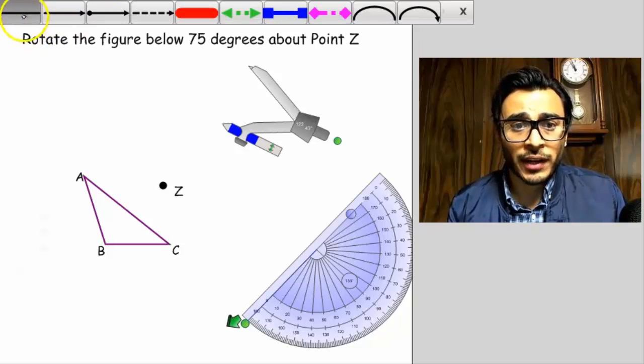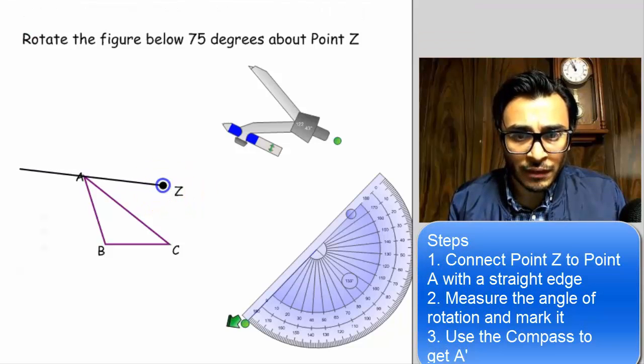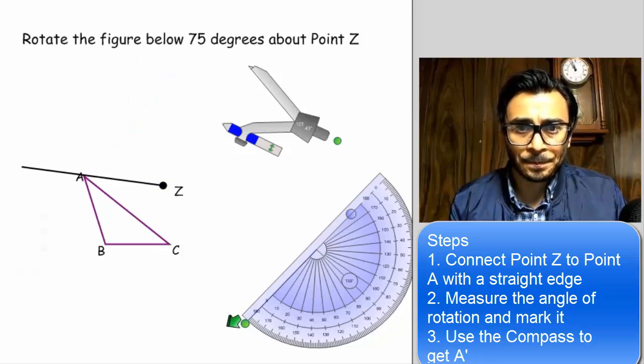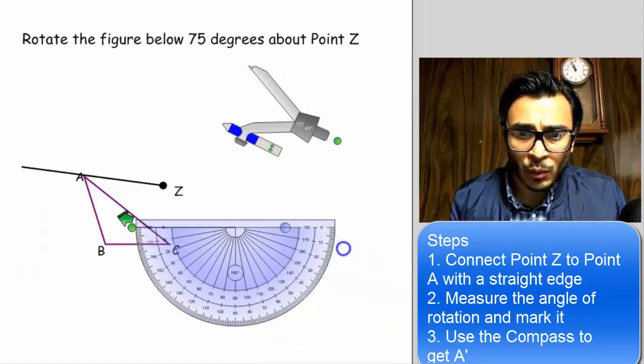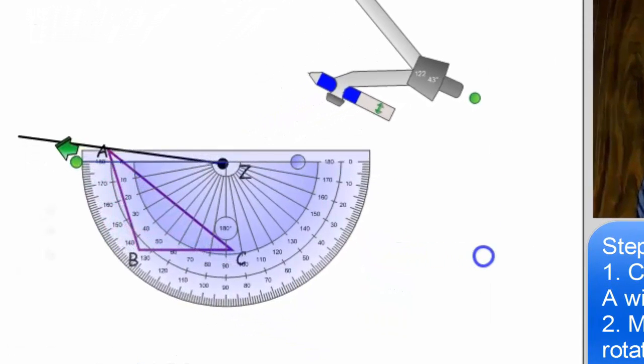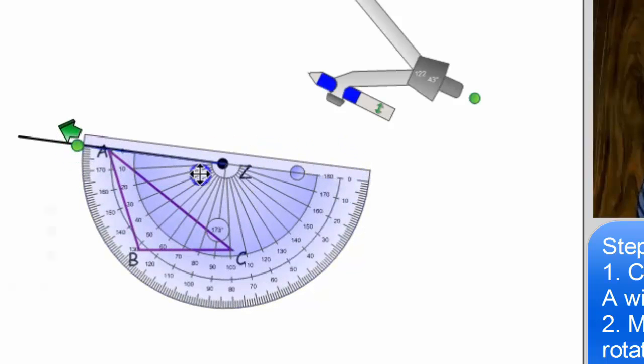So we're going to first connect point Z to point A and it's okay if I go over the point. And then I'm going to take my protractor and I'm going to place it perfectly so that the zero degree mark aligns with that line that I just drew where I connected Z and A. So you see how it's perfectly placed, the bullseye right there, and you can see it aligns perfectly with the zero degree mark.